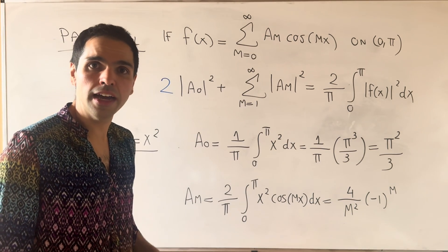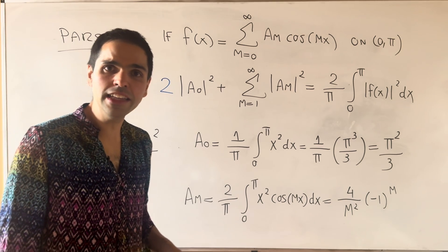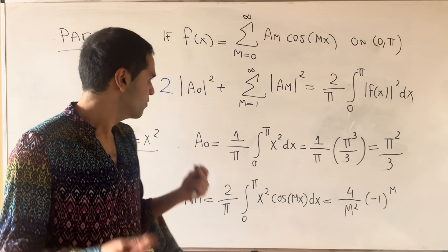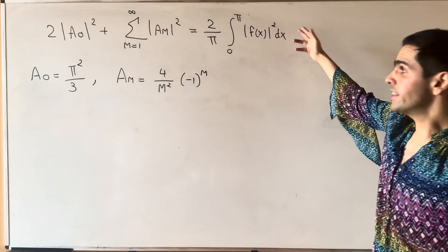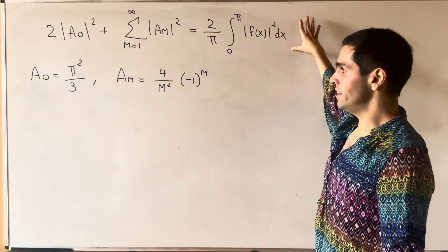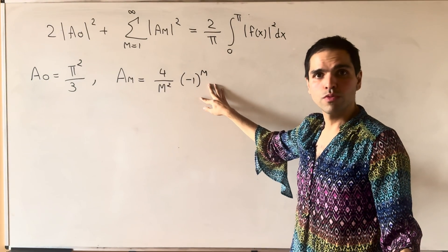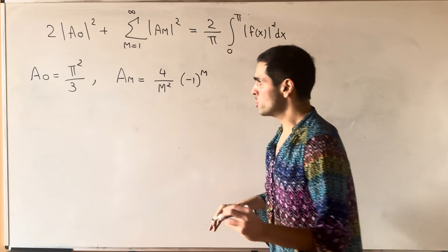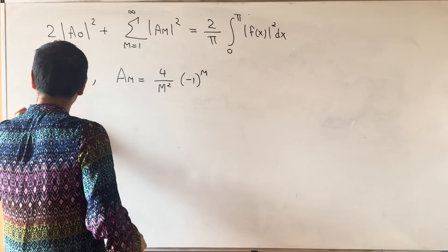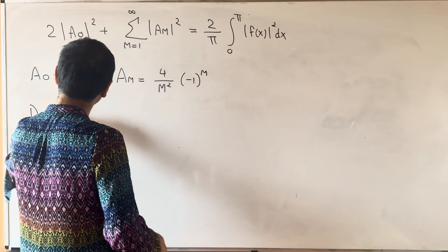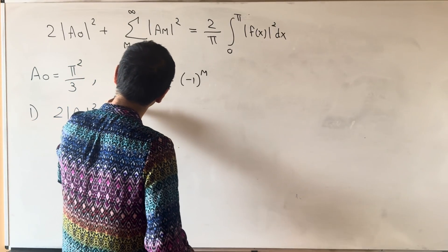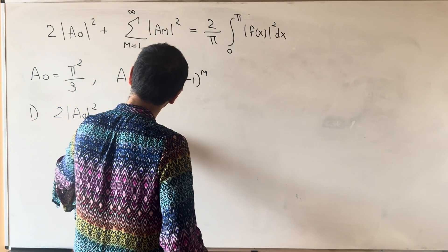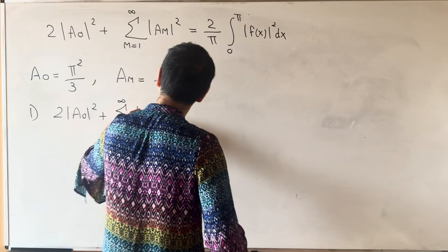So once again, this is Parseval's identity, and those are the coefficients we found. So now, let's just apply this. So let's look at the left-hand side. 2a_0 squared plus the sum from m from 1 to infinity of a_m squared.